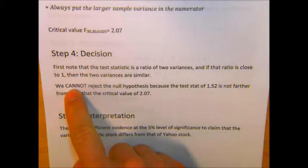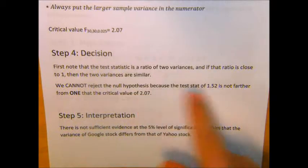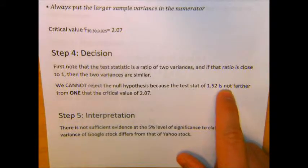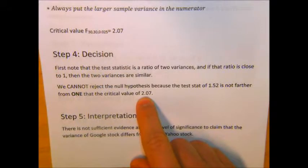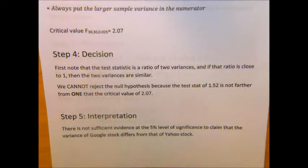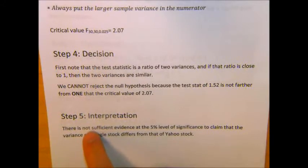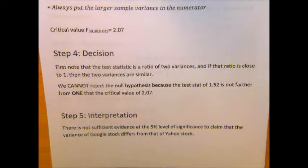Here we cannot reject the null hypothesis because our test statistic of 1.52 is not farther from 1 than the critical value of 2.07. The test statistic did not provide enough extreme evidence to reject the null hypothesis. Thus there is not sufficient evidence at the 5% level of significance to claim that the variance of Google stock differs from that of Yahoo stock.